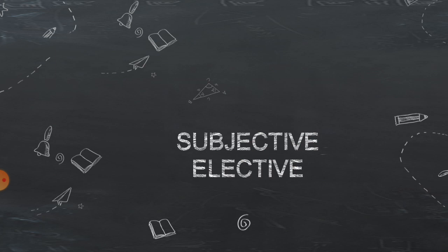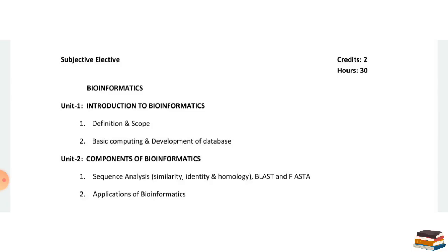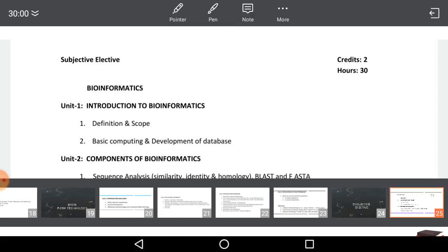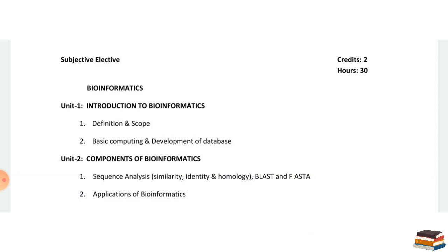After the 4 compulsory papers, the 5th paper is a subjective elective — Bioinformatics. Bioinformatics relates biological tools to information technology. Unit 1 is an introduction to bioinformatics covering its scope, history, basic computing, and the development of databases and computer tools. Unit 2 covers components of bioinformatics, software like BLAST, and the applications of bioinformatics.